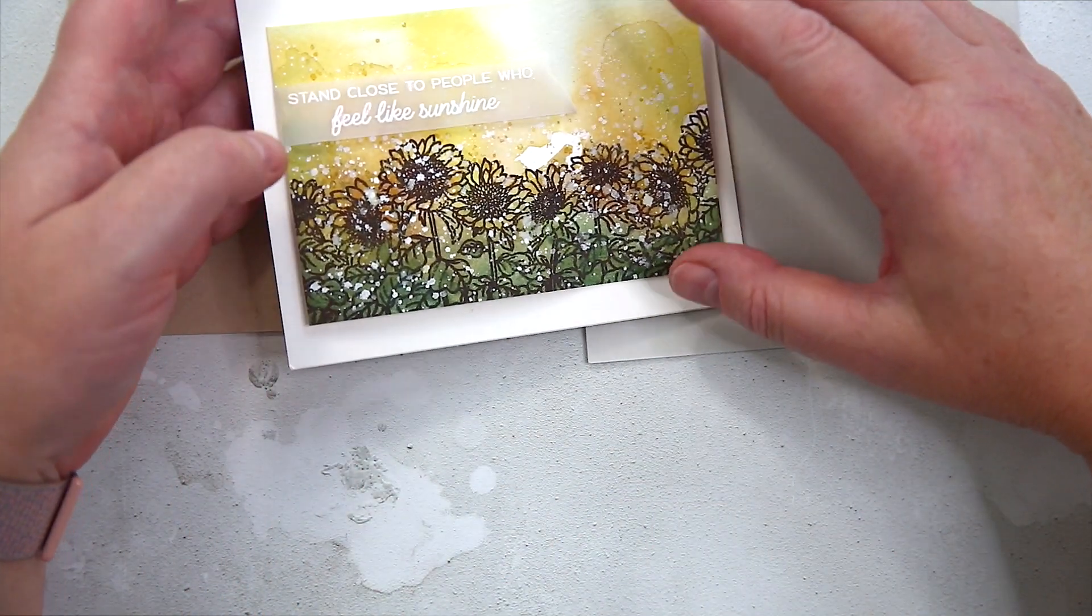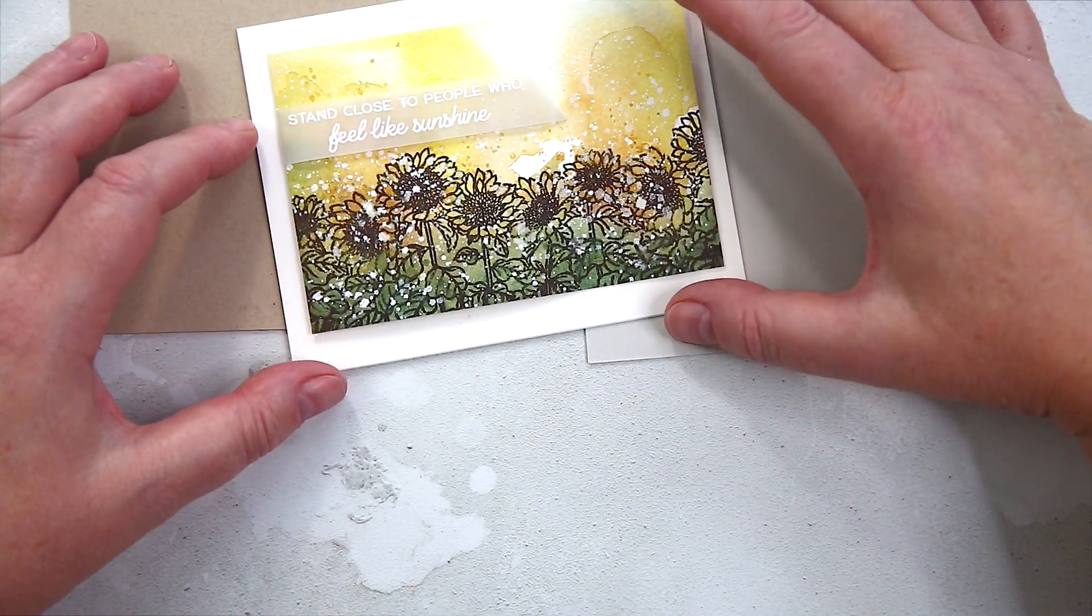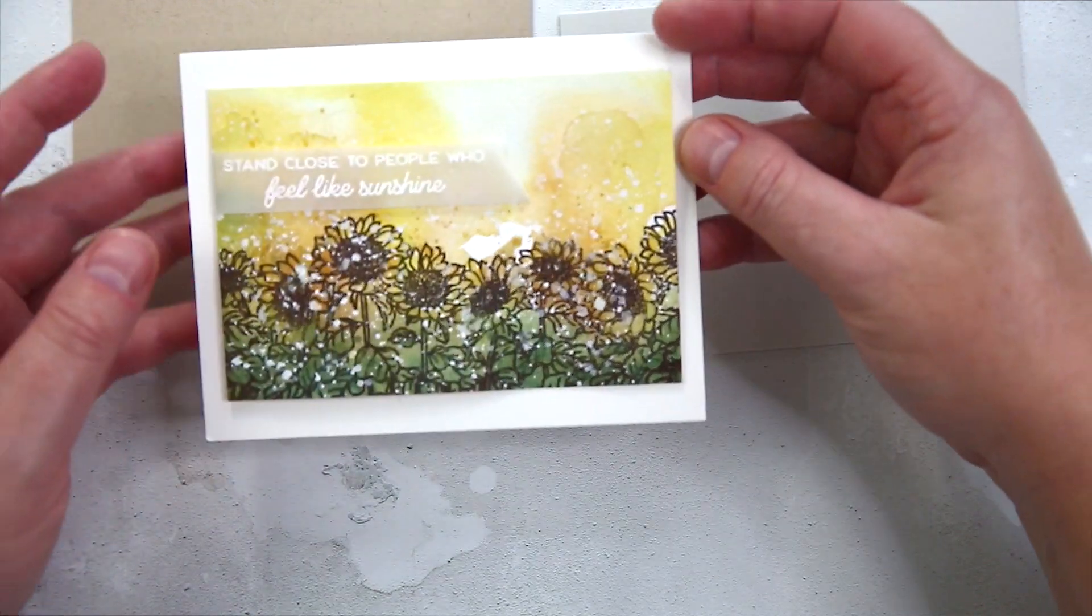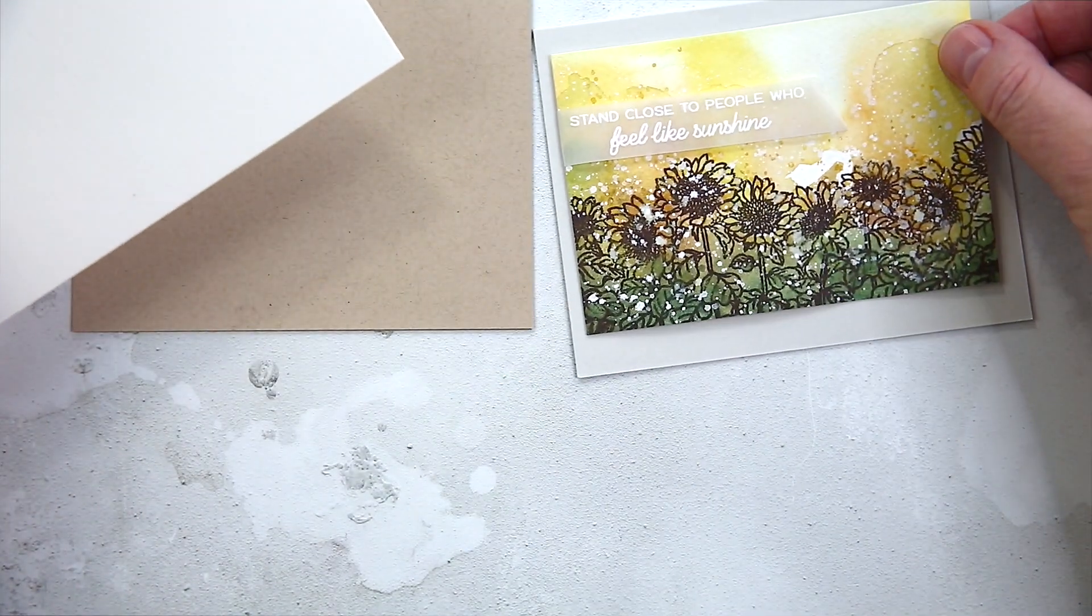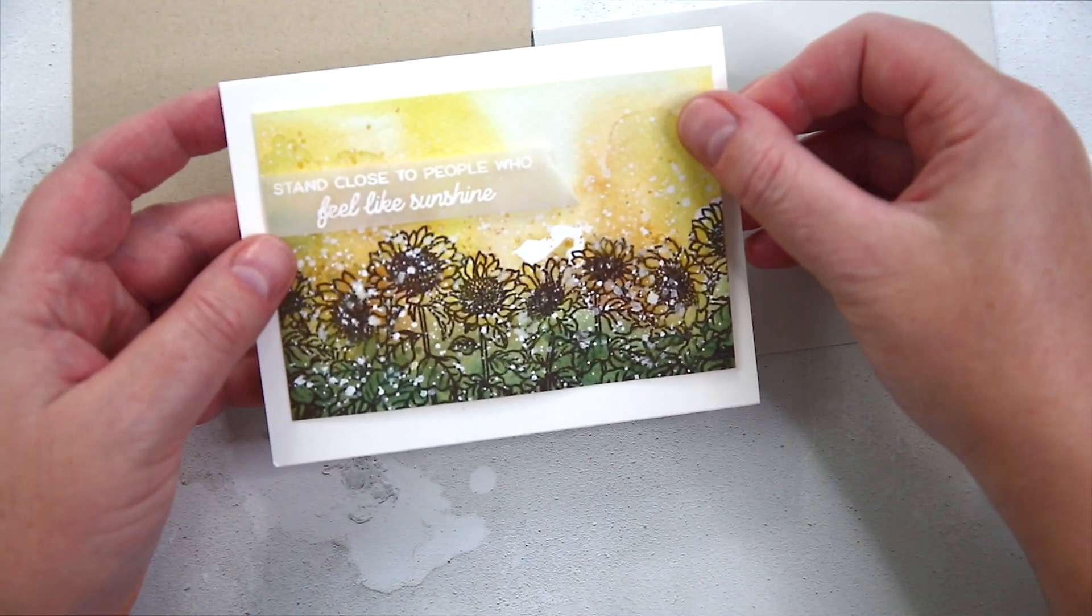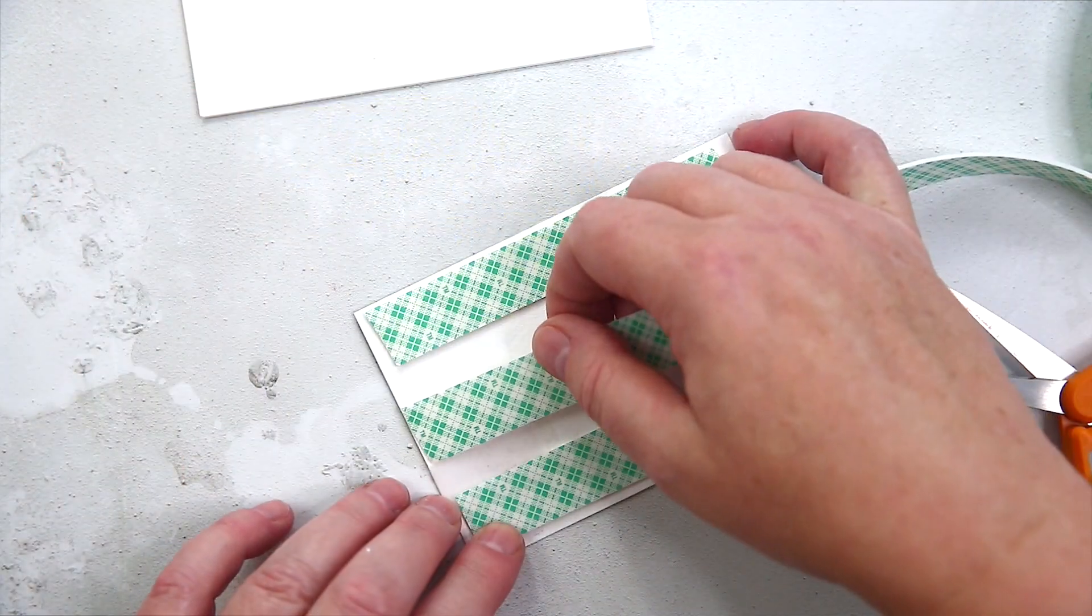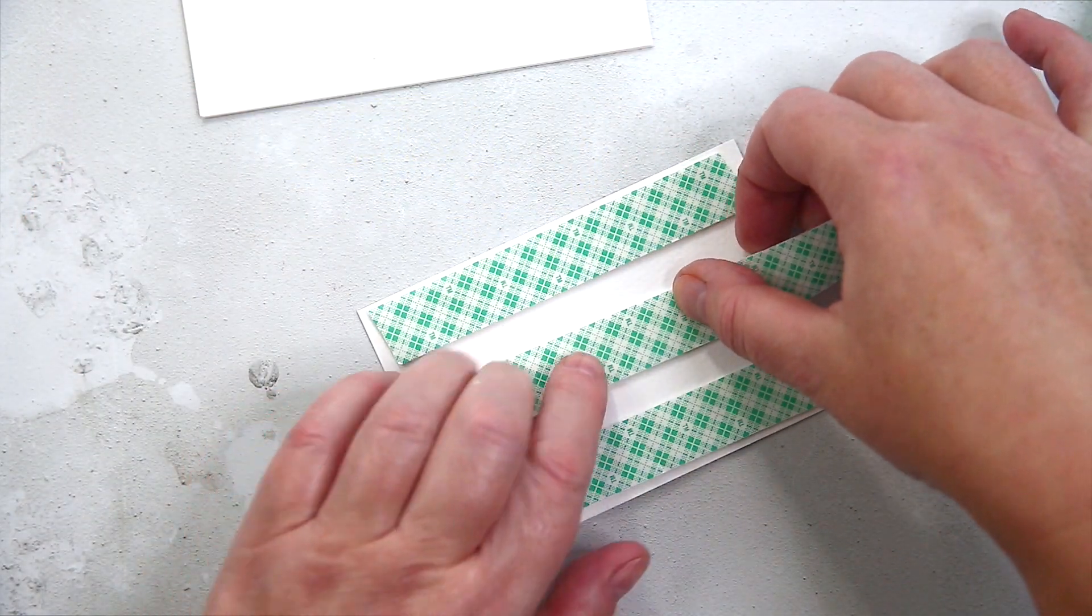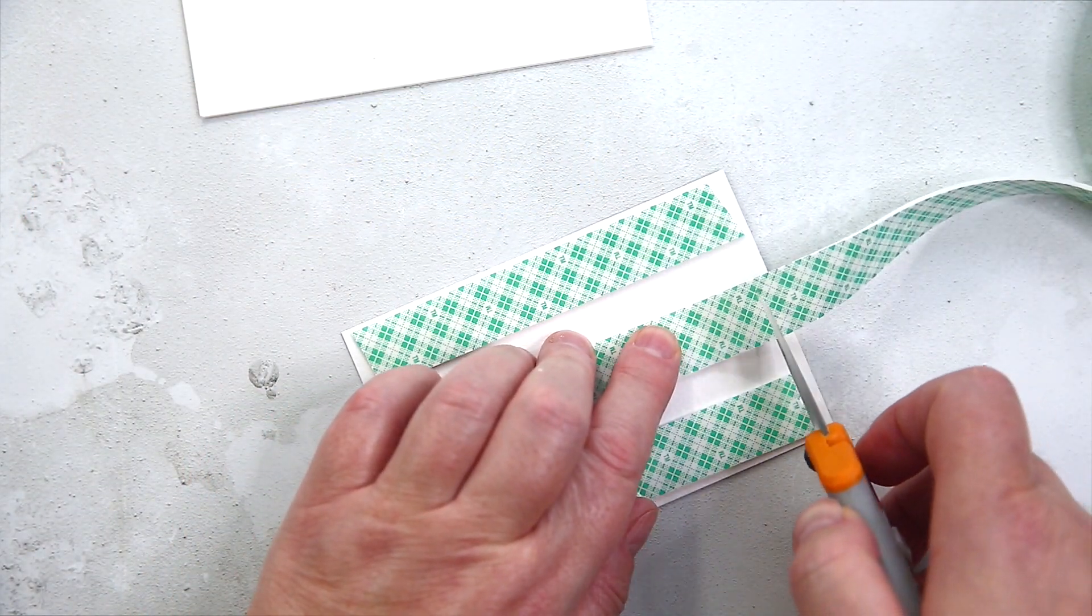I pulled out my three favorite card bases cut from Neenah Desert Storm, Fog, and Ivory card. I keep a bunch of these cut and scored ready for when I want them. I laid the watercolor panel on each and decided I liked the contrast between the ivory and the colorful watercolor.